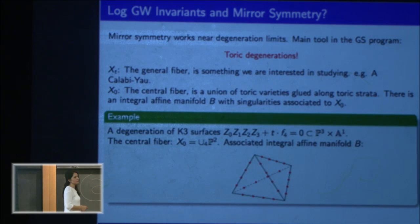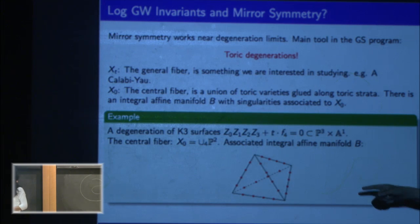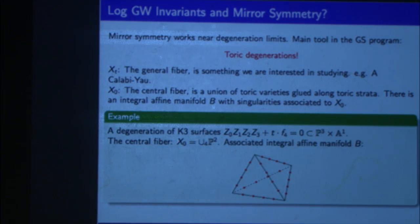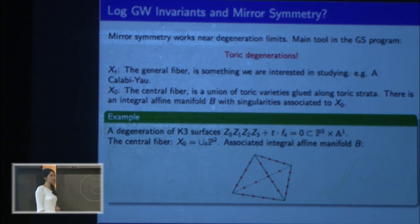For instance, you can consider a degeneration of K3 surfaces given like this, and the central fiber will be a copy of unions of four copies of CP2 glued along CP1. And the nice thing about these degenerations is you can associate to the central fiber an integral affine manifold with singularities. In this case, it's the tetrahedron, and the integral affine manifold admits 24 singular points as its singular structure. So you can cover it with charts, the transition functions in GLnZ semi-direct product C2, away from these 24 singular points.